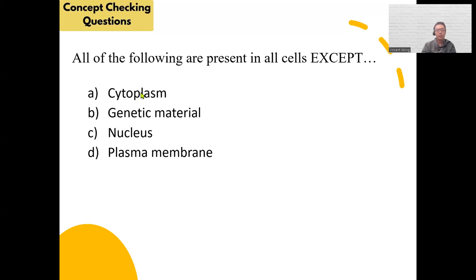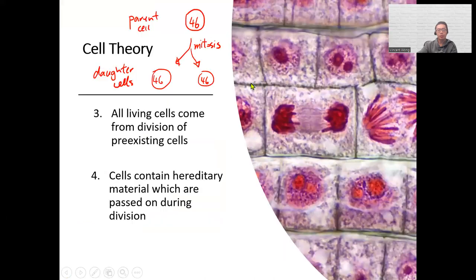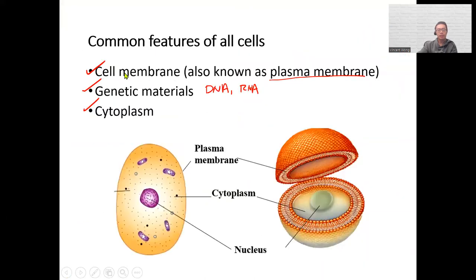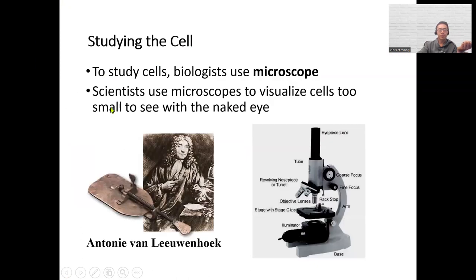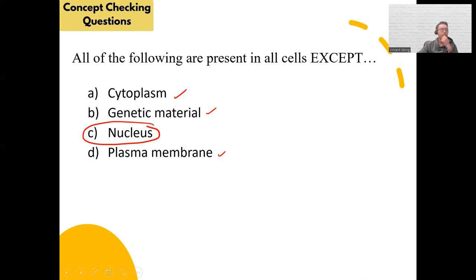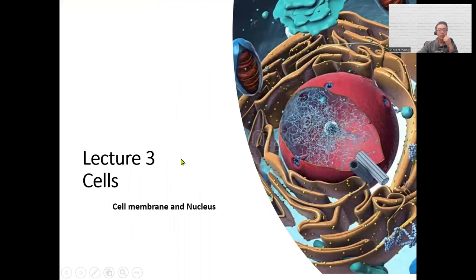Poll question result: all cells must have the following except the nucleus. They all have cytoplasm, genetic material, and plasma membrane. The nucleus is only found in some cells, not all — those three are the common features of all cells. So the answer is C. Now moving on: the first distinction we'll make is the difference between eukaryotic and prokaryotic cells.